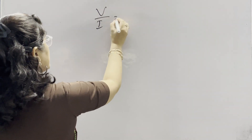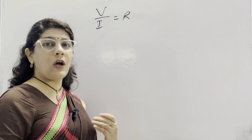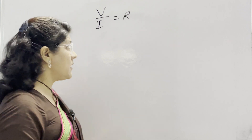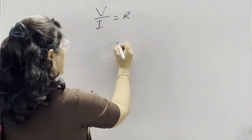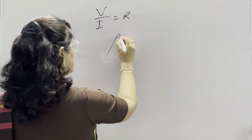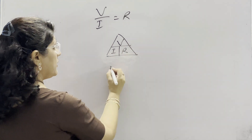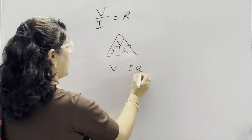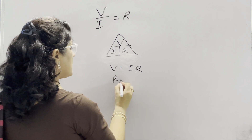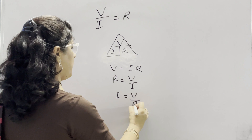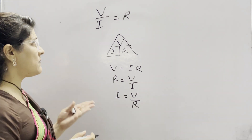V upon I is constant and this constant is known as resistance — the obstruction offered to the flow of current through a conductor. You can remember this relation using V, I, and R: V is equal to I × R; R is equal to V / I; and I is equal to V / R.